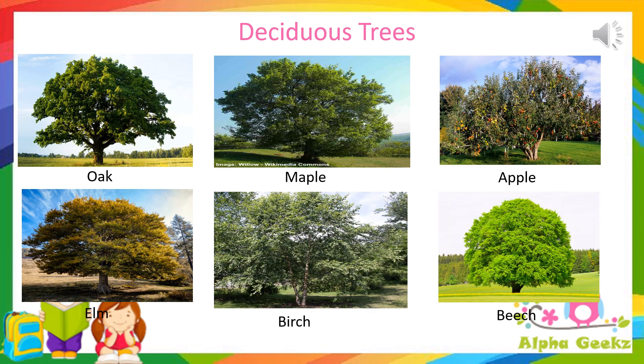The evergreen trees of the plain are those trees that grow in hot and wet climates. An example is some varieties of the neem plant.